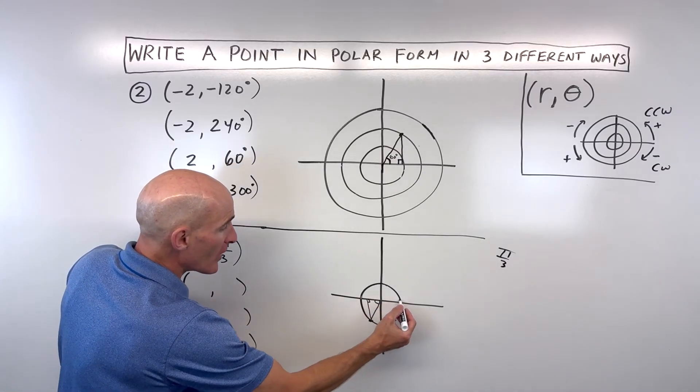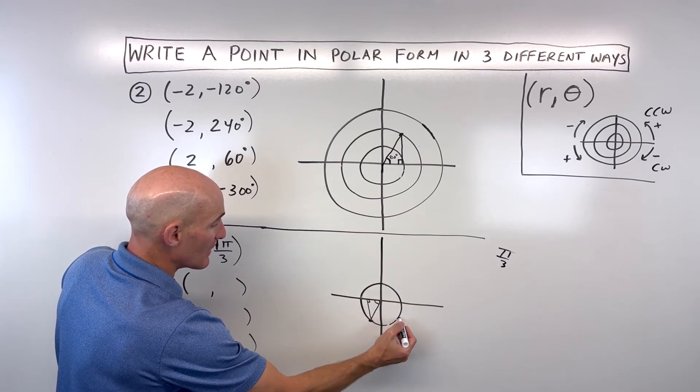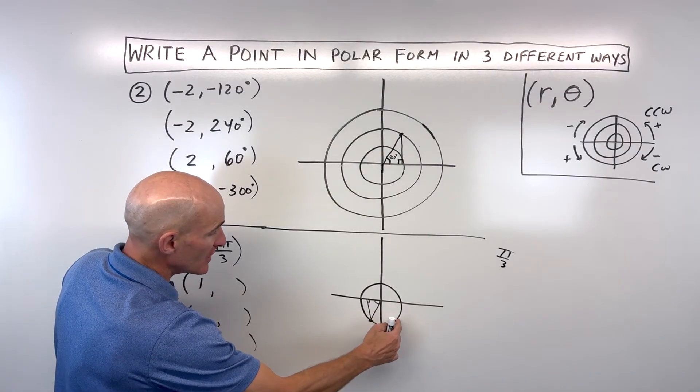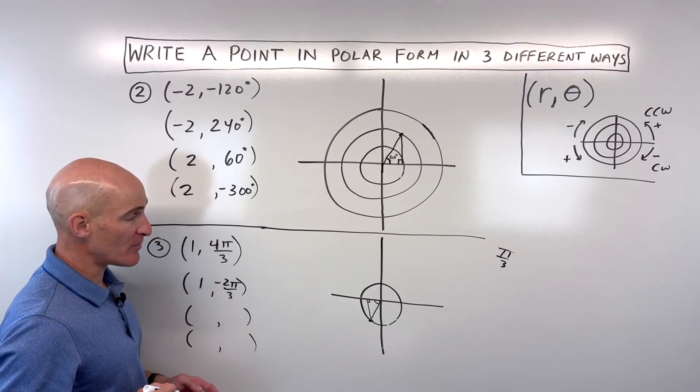We could also go right one and rotate. Instead of counterclockwise, we could rotate clockwise. How much? This would be two-thirds of pi. Because we're going clockwise, it's a negative angle, so negative two-thirds pi.